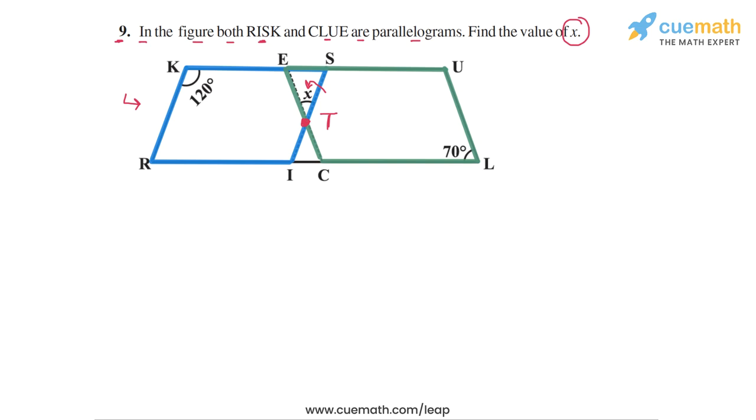What we will do is focus on the triangle EST. Let me highlight this triangle for you—EST, this triangle. In this triangle, one of the angles, which is the angle at T, is the unknown X. And then the other two angles are the angles at E and the angle at S.